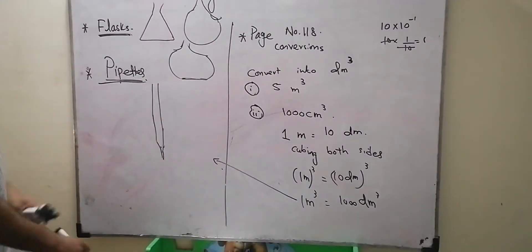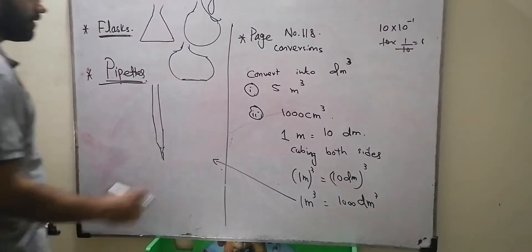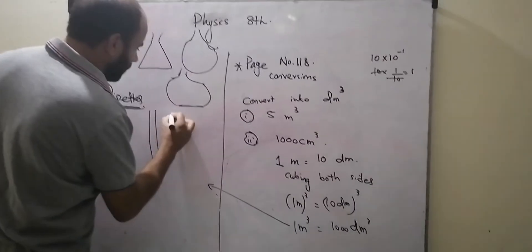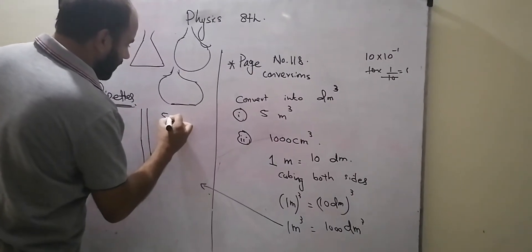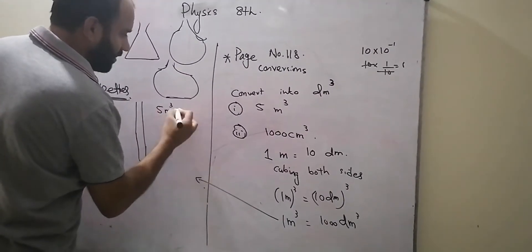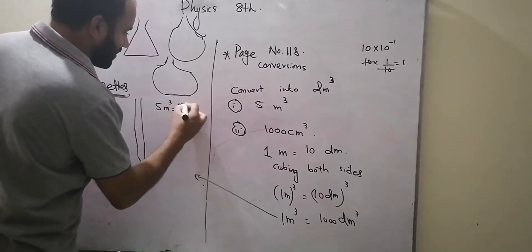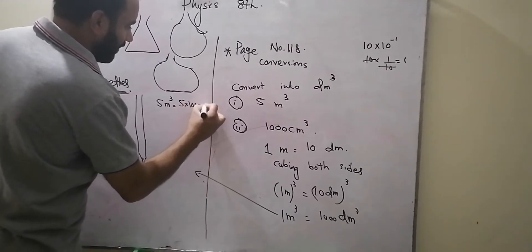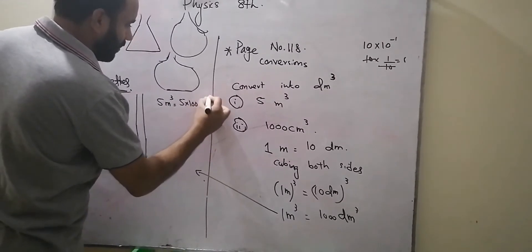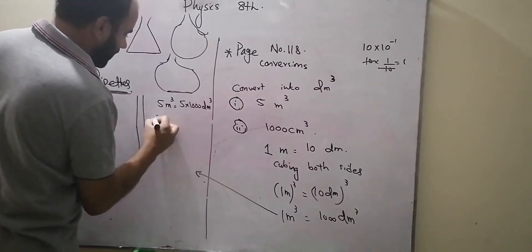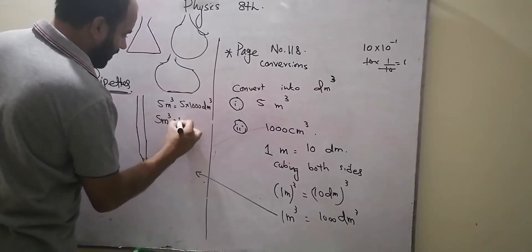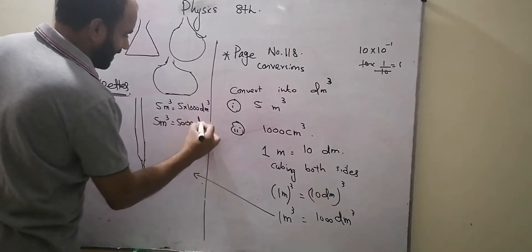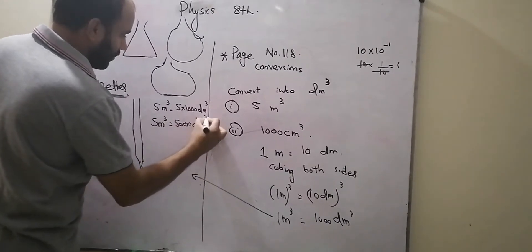If you convert 5 meter cubed, you multiply by 5, and the answer is that 5 meter cubed is actually 5000 decimetre cubed.